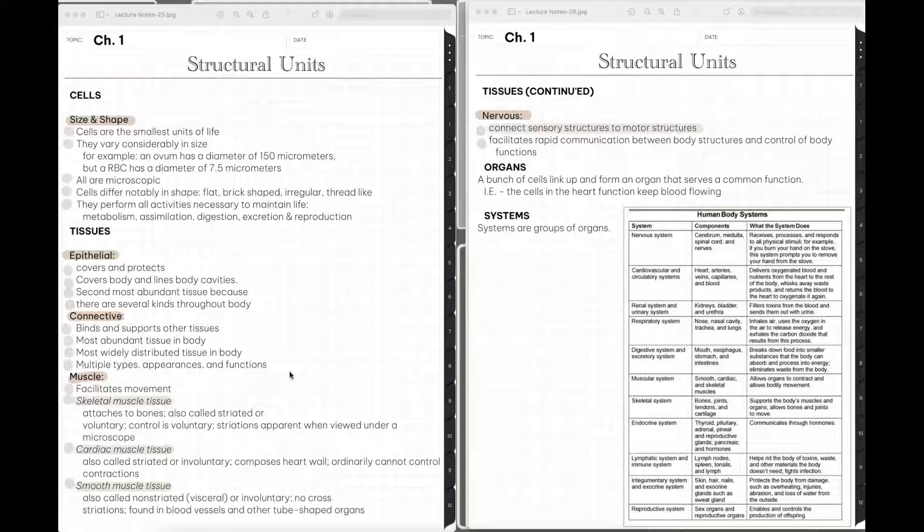The last type of muscle is smooth muscle tissue. It is also called non-striated or visceral. It is also involuntary. So these striations are kind of like grooves or lines in the muscle tissue. And smooth muscle then would not have those because it's smooth. And so it doesn't really have any cross striations. It's often found in blood vessels and other tube shaped organs or organs that have hollow openings.